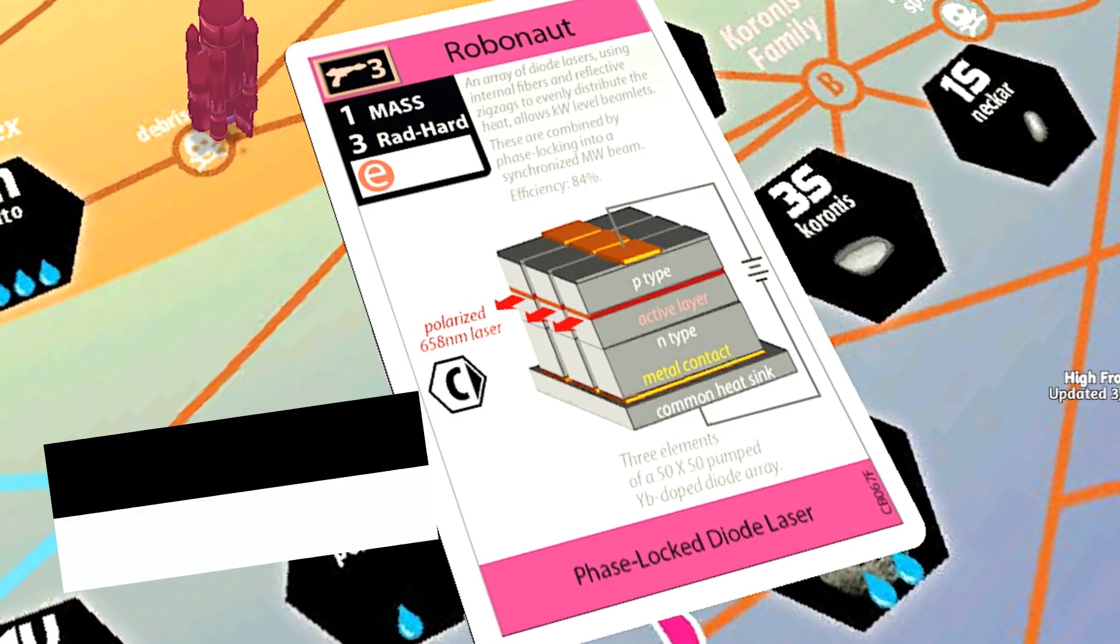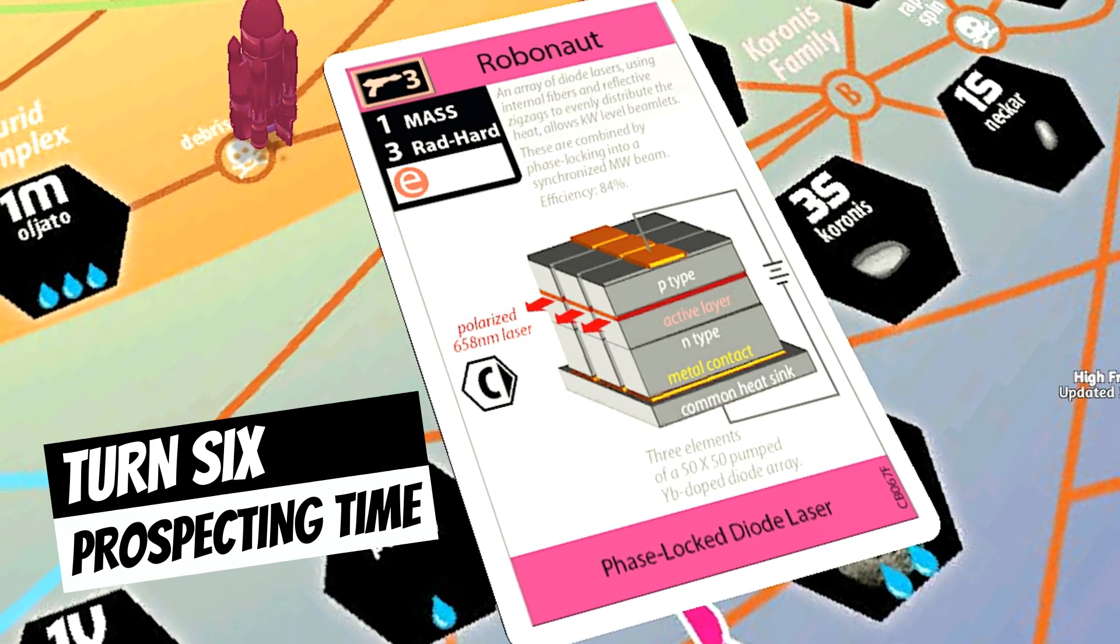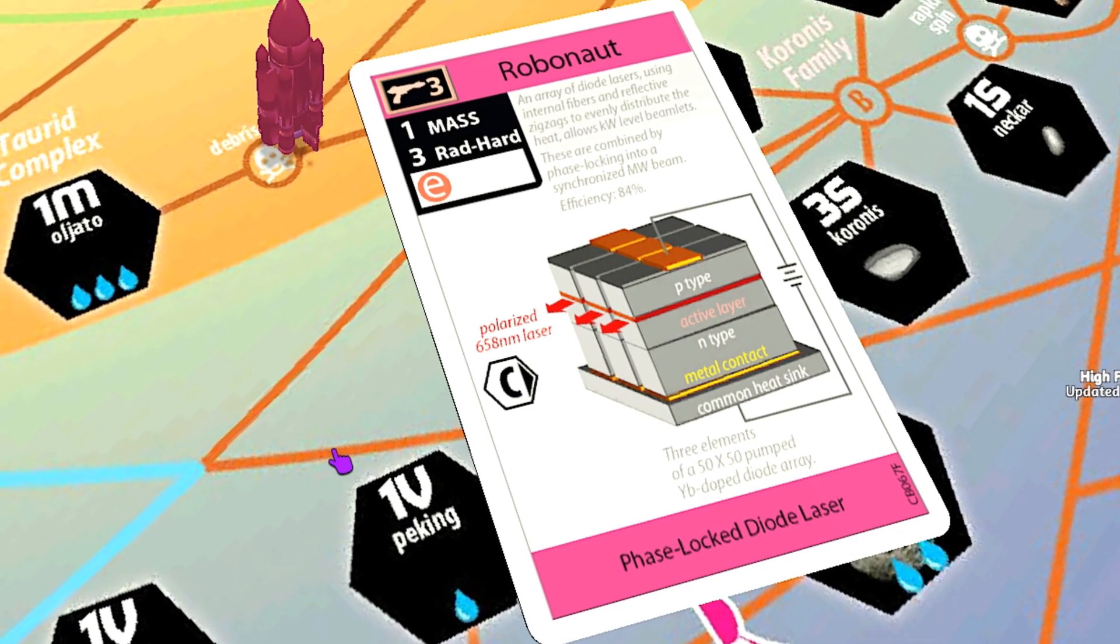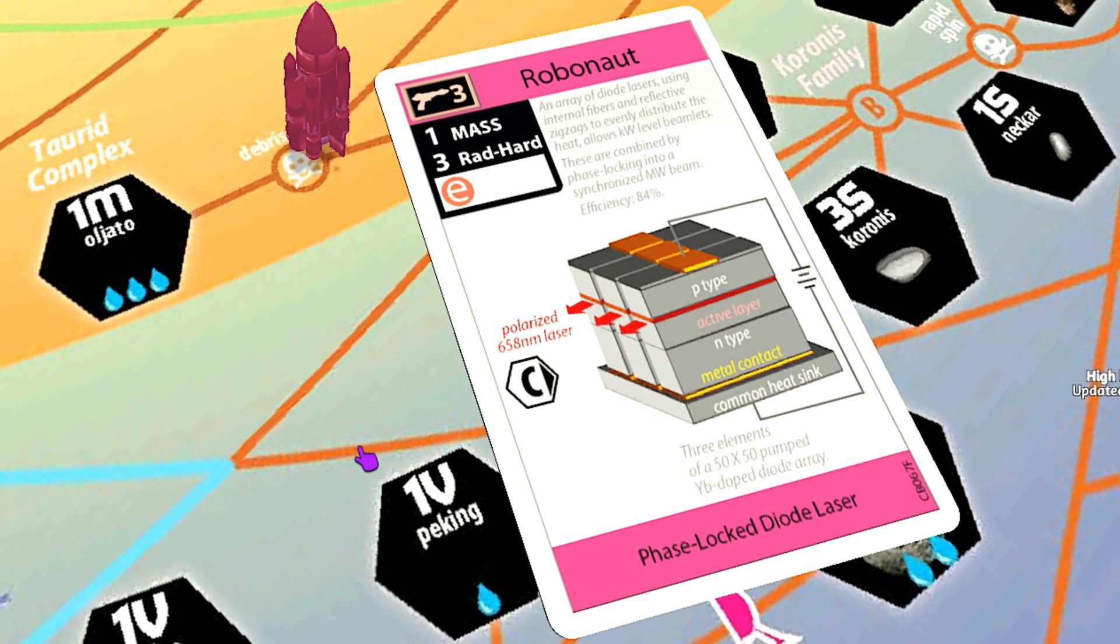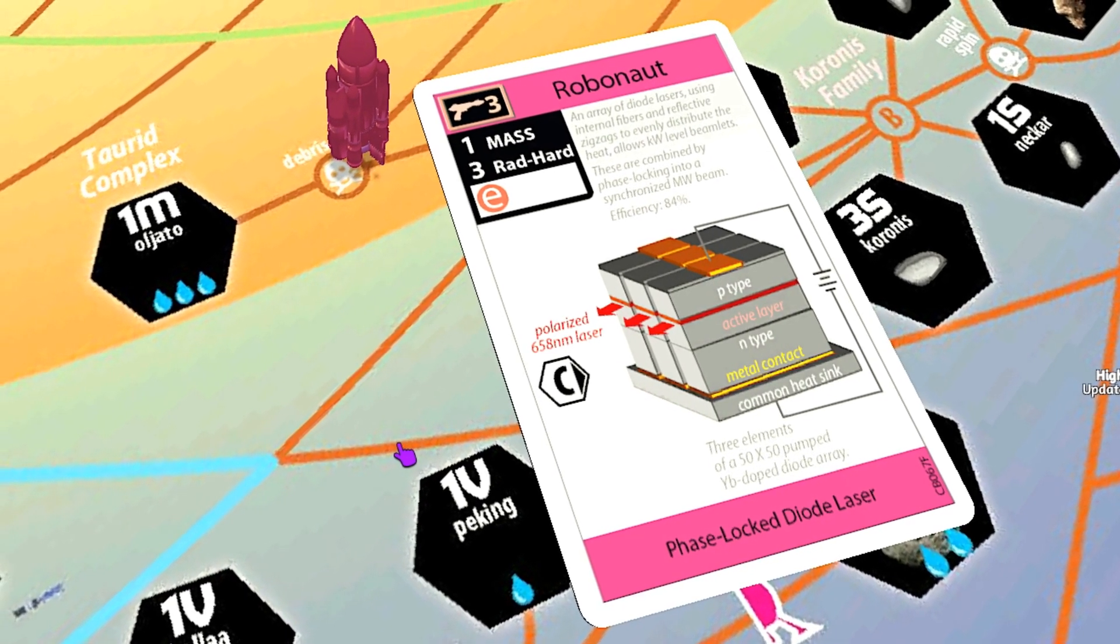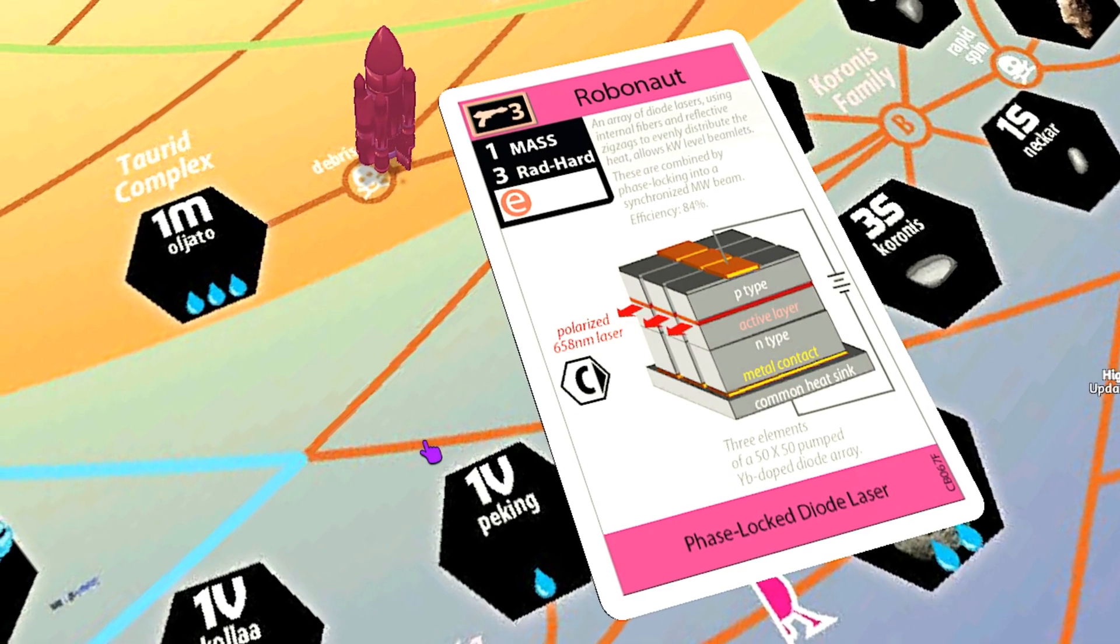Now I will try to prospect. In order to prospect, you need a card with an ISRU rating, which stands for in situ resource utilization. Cards have a rating from zero, which is the best, to four, which is the worst.